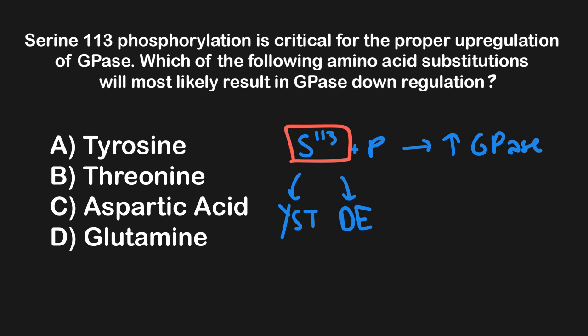Looking at the answer choices: tyrosine is wrong because it's one of the YST amino acids and can still be phosphorylated. The same is true of threonine. Aspartic acid is a phosphomimetic, so that's also not going to work. Therefore, glutamine is the correct answer — it's the only amino acid here that can't be phosphorylated and doesn't mimic a phosphorylated amino acid residue.